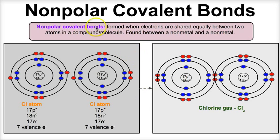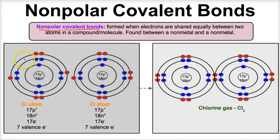In nonpolar covalent bonds, covalent bonds are bonds formed between two atoms when electrons are shared between those atoms. So covalent bonds exist when electrons are being shared. In a nonpolar covalent bond, electrons are shared equally because the electronegativity values of those atoms are very close to one another. For example, chlorine is diatomic, meaning it never exists as a single atom in nature — it always exists as two when not bonded to a different element.